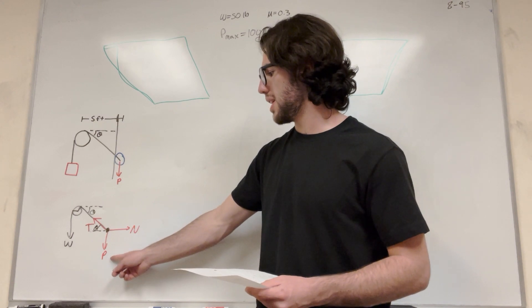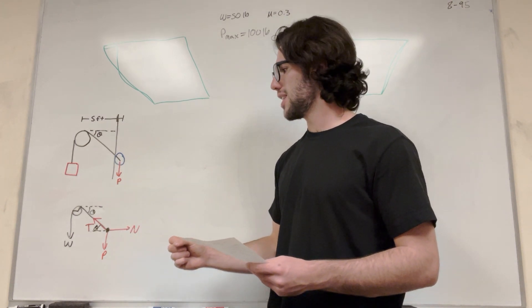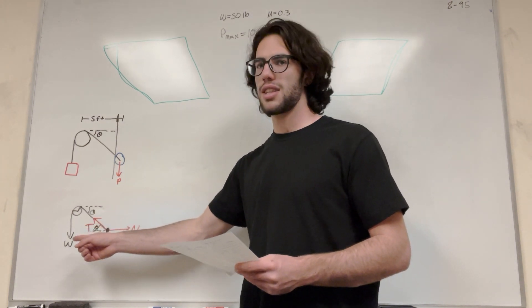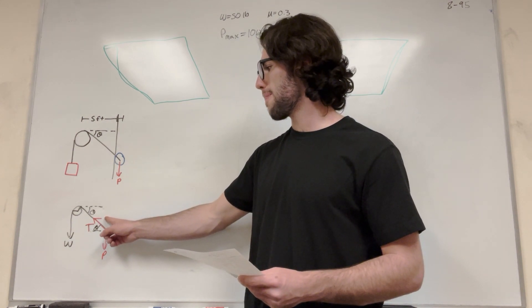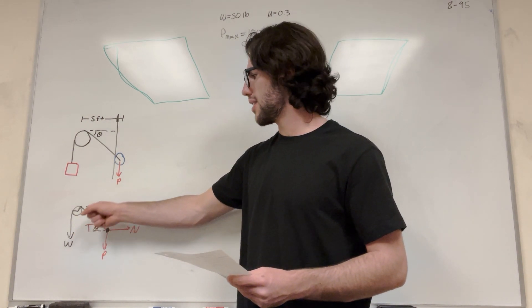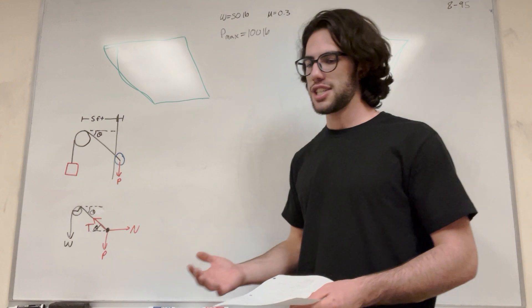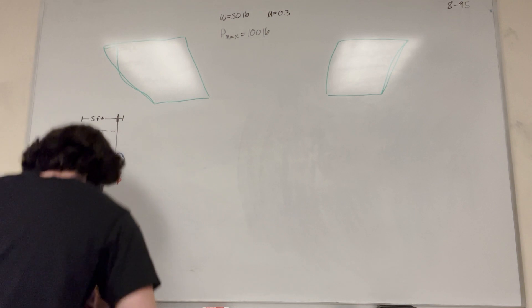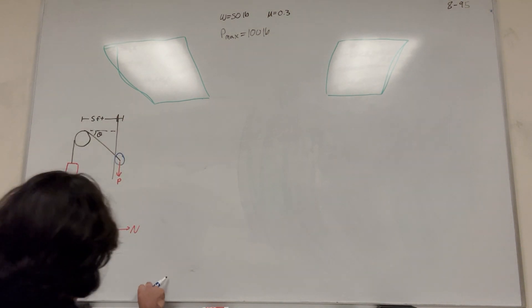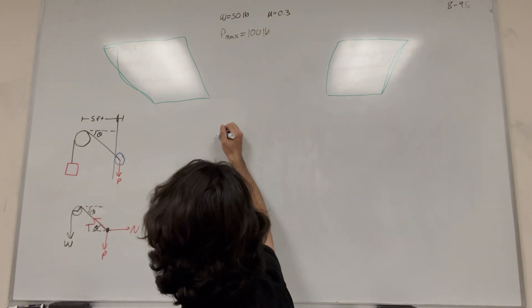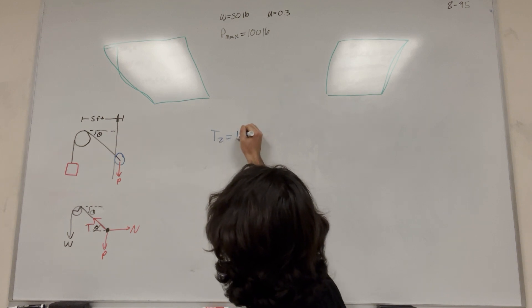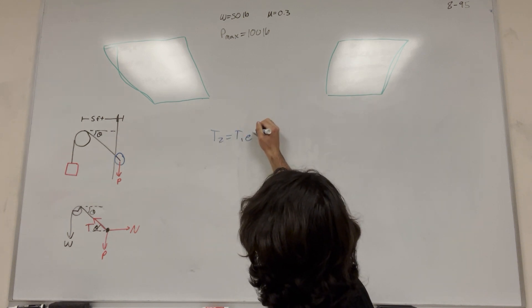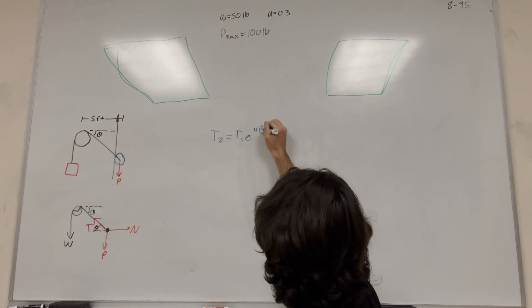So we're told that the P is at its maximum force before this thing is at equilibrium which means that this tension is going to be greater than this weight and we are not going to be able to find that tension but we're going to be able to get rid of it using a technique. So let's start with the equation that we're going to use for this and that equation is tension 2 is equal to tension 1 e to the coefficient of static friction times beta.